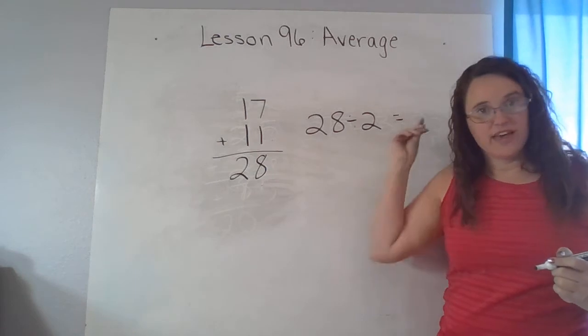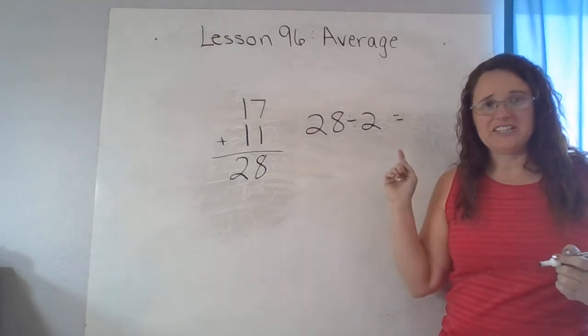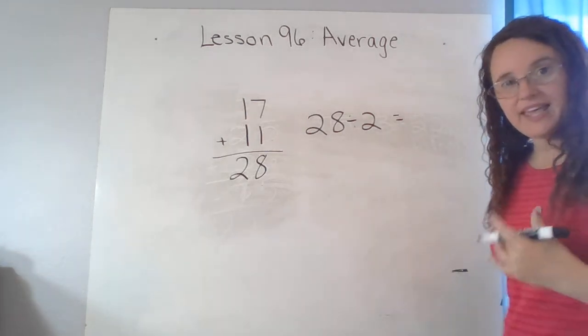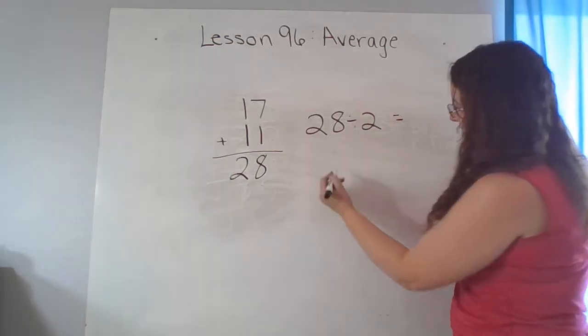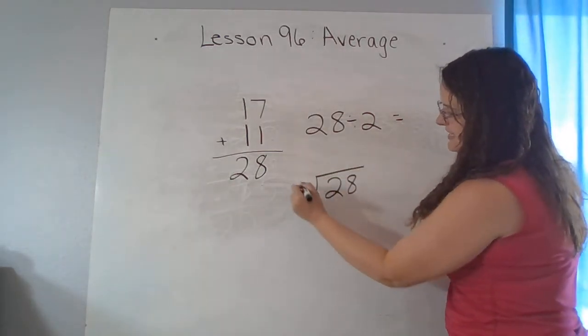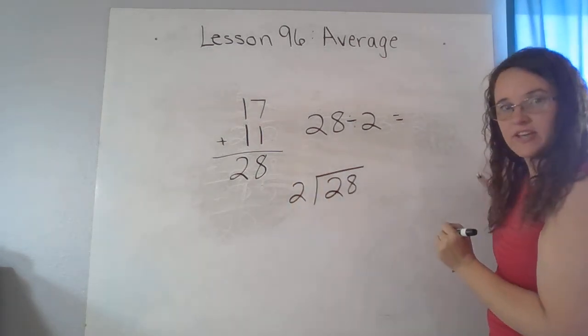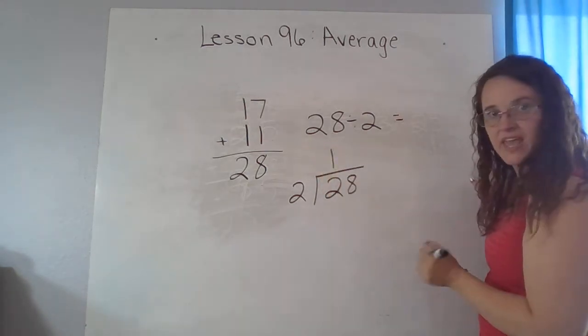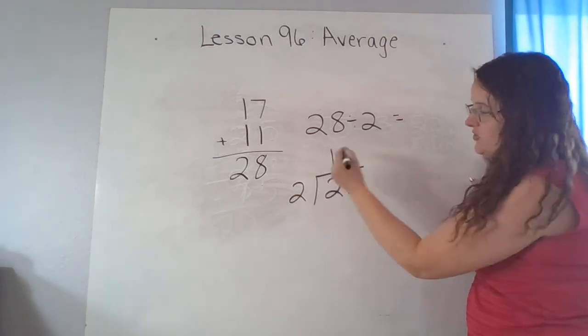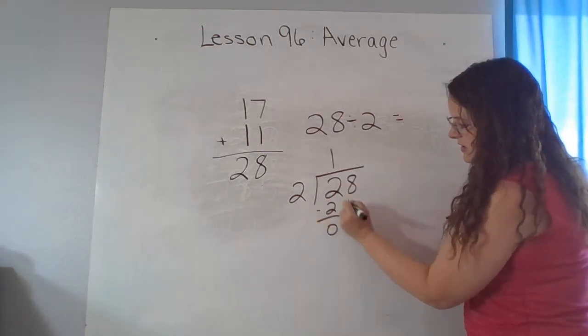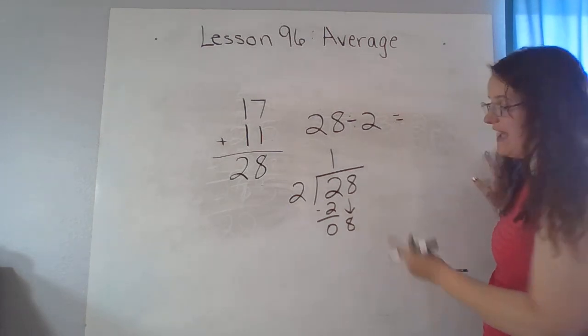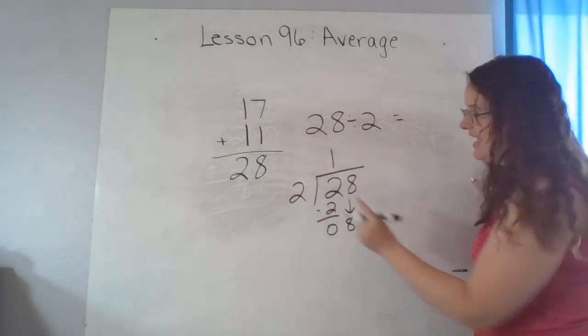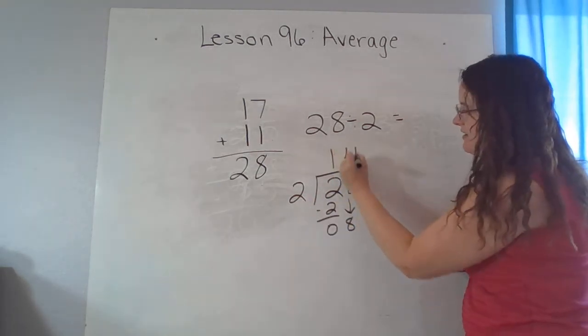Some of you, I'm sure, are going to do that right away in your head. Some of you might look at that and go, oh, that is not one of my facts. Seems a little tough. So if you need a little help with this, rewrite it. Rewrite it with the 28 inside the house so that then you can look at it one digit at a time. Two goes into two one time and we wouldn't have anything left over. So I could go through and drop my eight, but I don't have to. If I know I don't have anything left over, I can say two goes into two one time and two goes into eight four times.